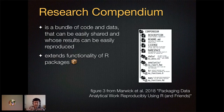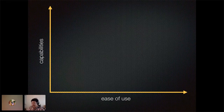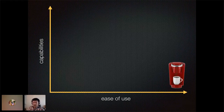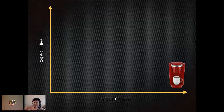We try to make this as simple as possible. This is the only graph I have in the talk. I have on the x-axis the ease of use and on the y-axis the capabilities of different kinds of tools. On one extreme, you have something like the Keurig one-push-button coffee machine — you push the button and it makes coffee. It's really easy to use and does one simple task really easily.